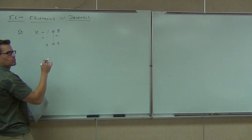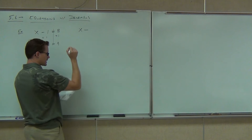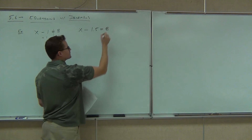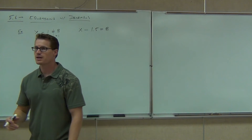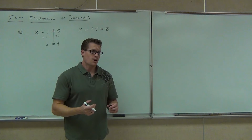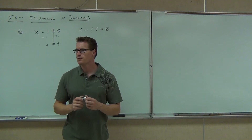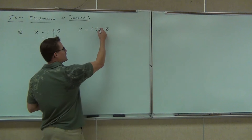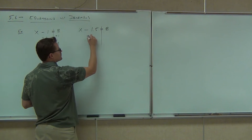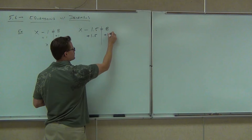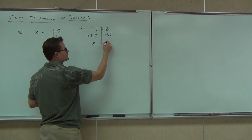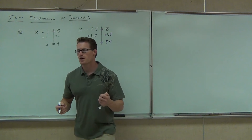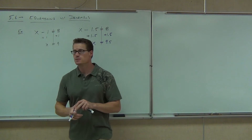Instead of x minus 1 equals 8, you're going to be dealing with something like x minus 1.5 equals 8 — where there's a decimal. Do you have to do anything different? No. Just like in the previous example, you're still going to add that 1.5 to both sides. So x on the left-hand side, 9.5 on the right-hand side. You can check your work: 9.5 minus 1.5 is 8. So we're good to go.